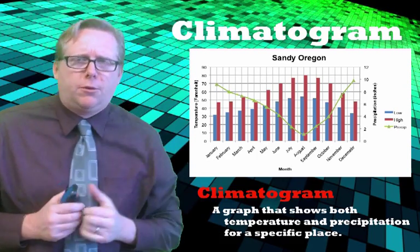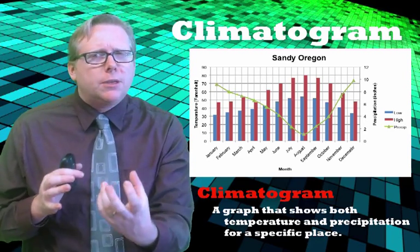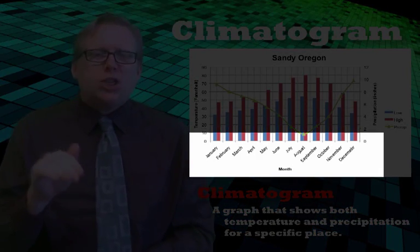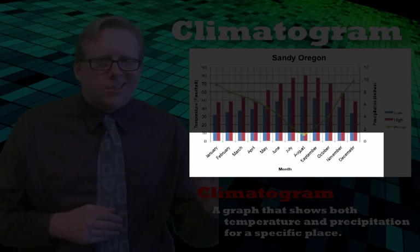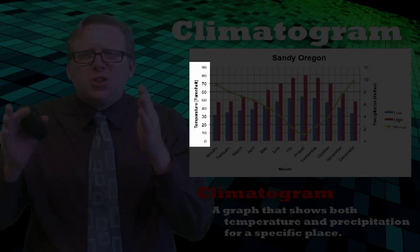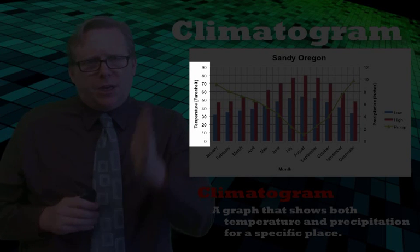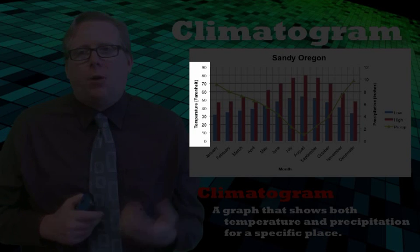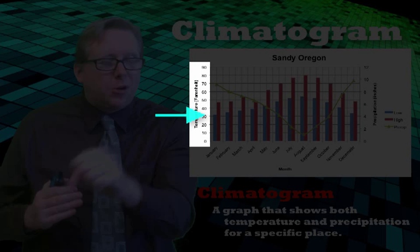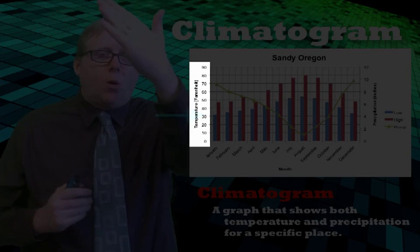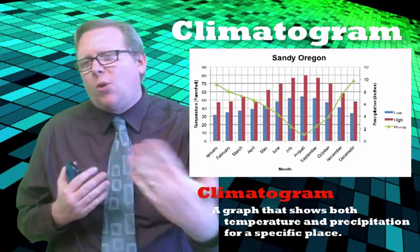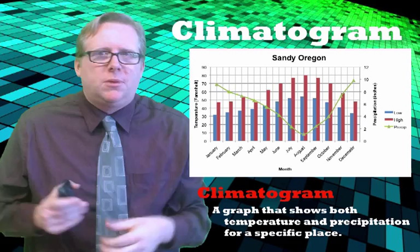Let's look at this climatogram for Sandy to see if we can read it. They can be a little confusing if you're not breaking them down. Let's start with the x-axis at the bottom — it shows the different months of the year, starting in January and going all the way to December, always structured the same. There are also two y-axes. On the left y-axis, you'll see temperature. Here in the United States we use Fahrenheit, where 32°F is where water freezes. For Sandy, it makes sense to go from about zero to 90°F.